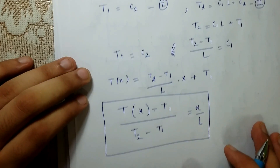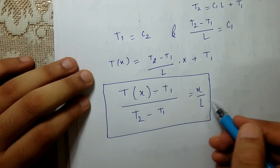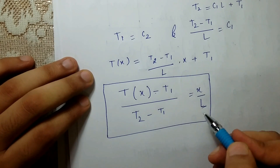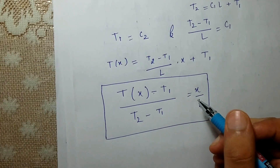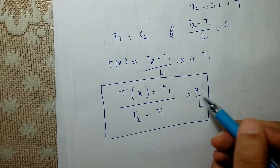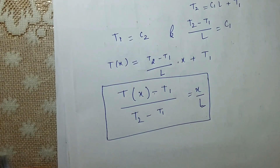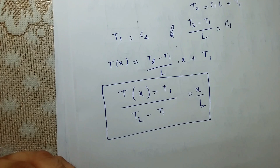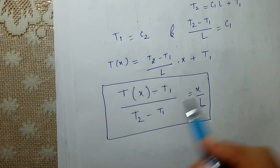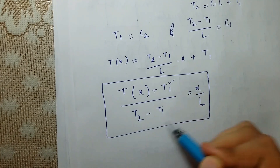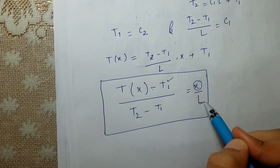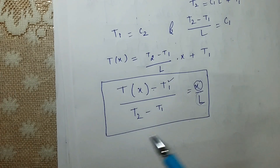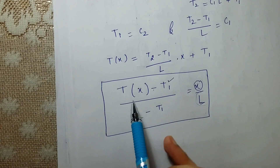This temperature distribution equation means that if you know T1, T2, the total thickness L, and the distance x at which you want to find the temperature, you can calculate T(x) at any intermediate point within the slab.